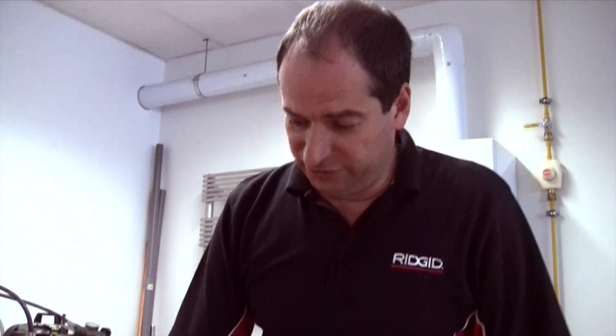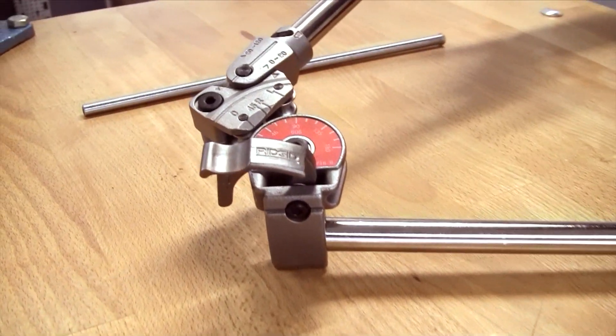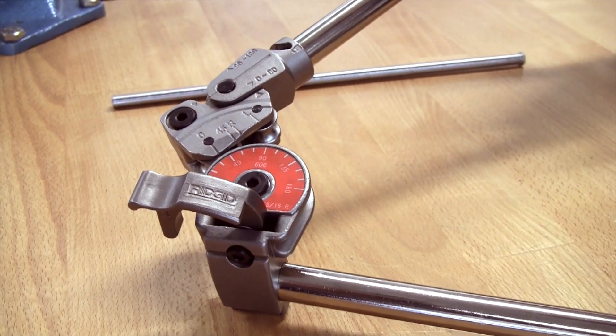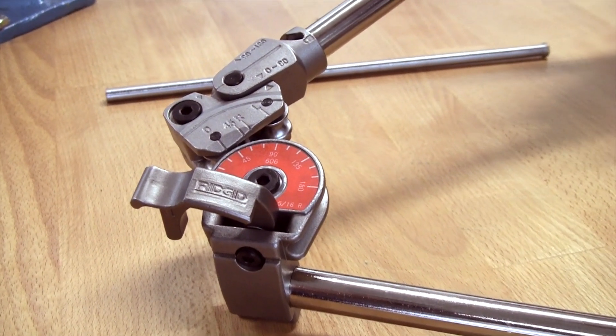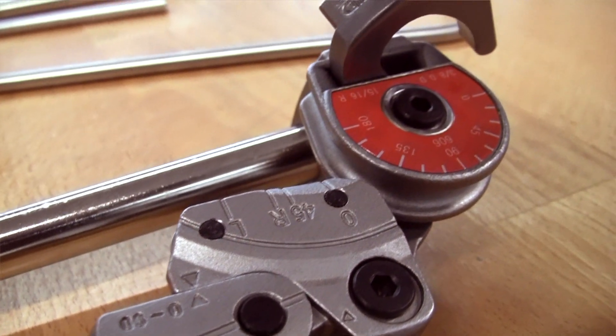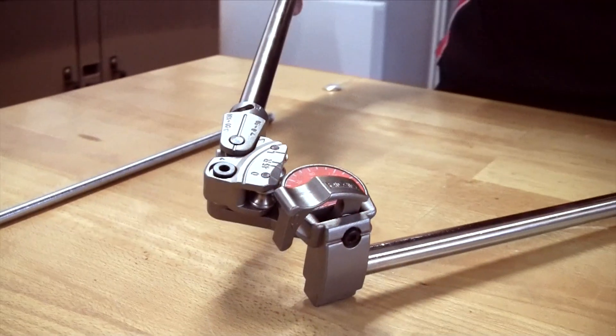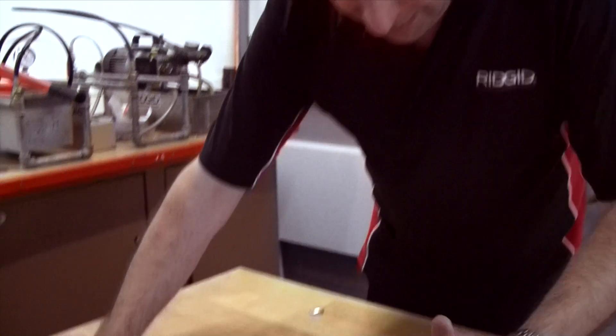So what we've done at Ridge is we've come up with a range of lever benders for small diameter tubes. These are available one size for each size of tube, so they come in a range from 6mm right the way through to 12mm, and 5/16 inch through to half inch.